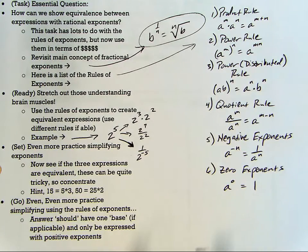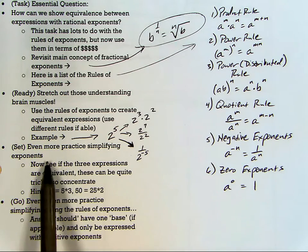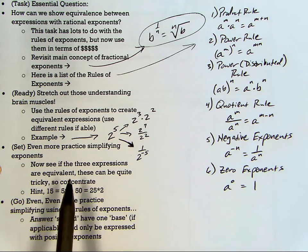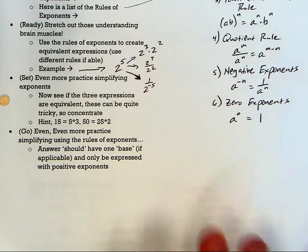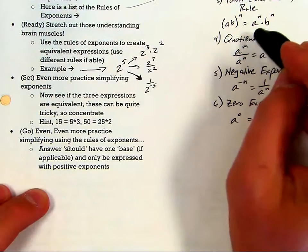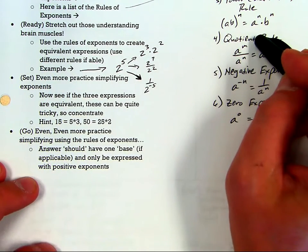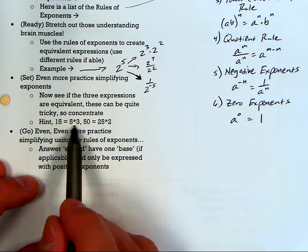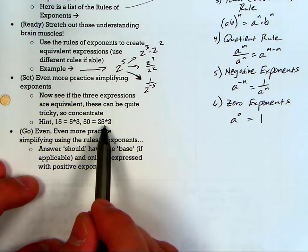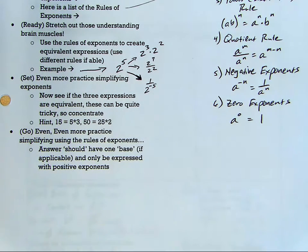All right, the set problems, it's more practice simplifying with exponents. Now this one's going to twist your brain up if you're not using these rules to simplify things and see if they all are the same thing. Here's a hint, 15 is 5 times 3, isn't it? And 50 is 25 times 2. That might help. Let's take a look at those set problems.